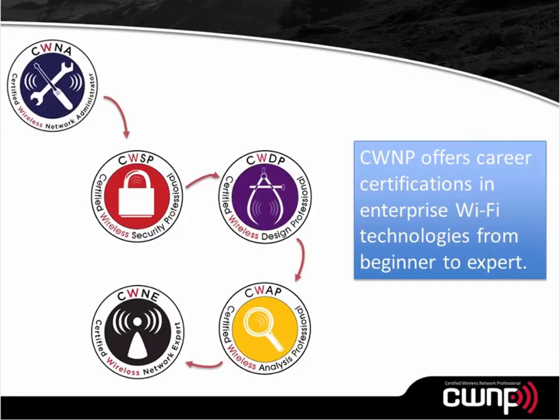At the professional level there are three certifications: the security professional, the design professional, and the analysis professional. Security focuses on making sure our network is secure — only those who should have access do have access — and all data is protected from eavesdropping and other attacks. Design is about planning and implementing an effective wireless LAN that meets your needs, which is why needs analysis is a big part of CWDP. The analysis professional is focused on making an existing wireless LAN perform better and resolving problems — it's really a troubleshooting master class.